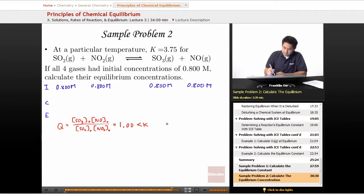And because Q is less than K, that means we are going to shift to the right. Therefore, the sign that goes here is going to be minus X. This is minus X. This is plus X. This is plus X.